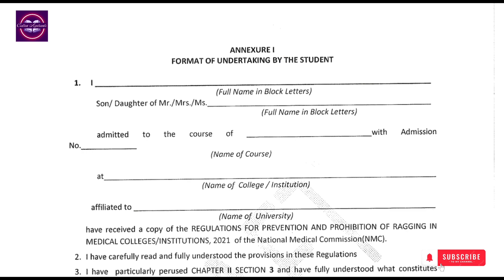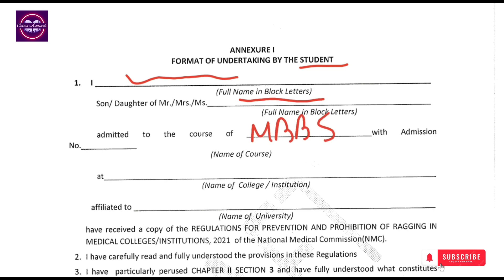Let's look at how the student fills it out. First, you will write your name in block letters, along with your father's and mother's name. Then you will write your course — MBBS or BDS. Once you have admission, you will write your admission number.